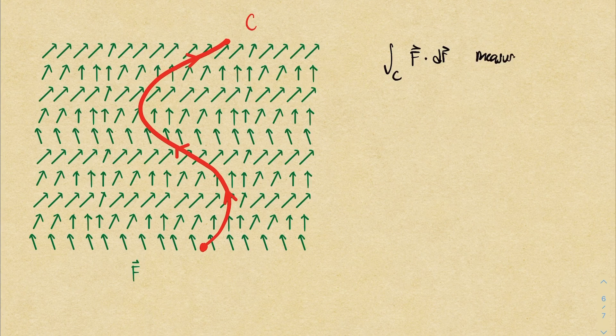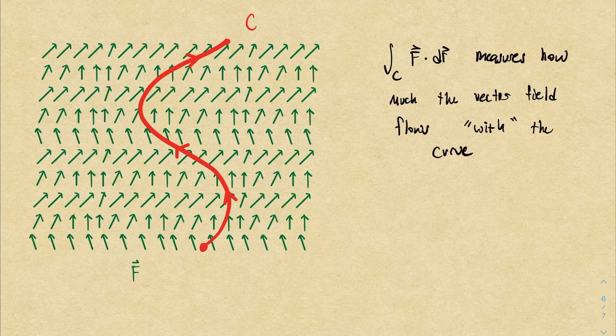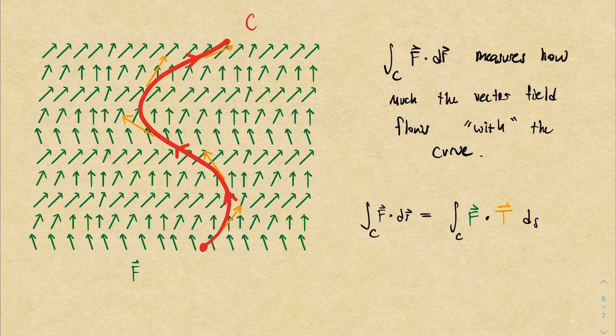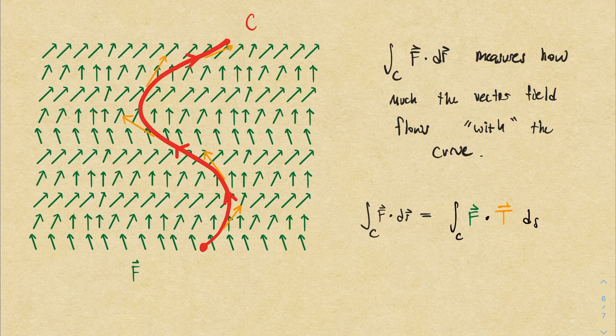Roughly, it measures how much the vector field flows with the curve. It measures the flow along the curve because when we compute such a line integral, we dot the vector field with the unit tangent vector along the curve. But what if we want to measure how much the vector field flows through the curve? In other words, we want to measure the flow in a perpendicular direction to the curve rather than a tangent direction.